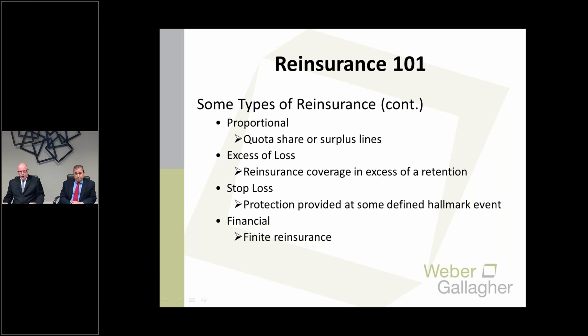Some types of reinsurance: proportional reinsurance, which could be quota share or surplus lines. Quota share means reinsurers generally follow from dollar one and take a proportionate amount of risk on policies the cedent writes. On surplus lines, reinsurers would take a proportionate amount of risk but it would be over a retention. For smaller carriers that retention could be $100,000; for larger carriers it could be $1 million, $5 million, or even $10 million.